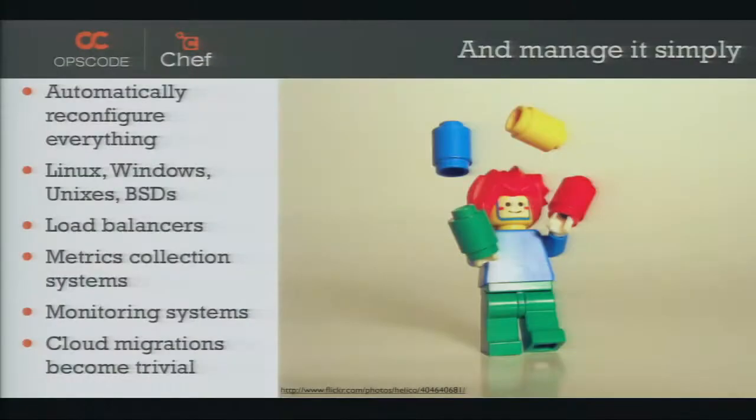When you have an infrastructure that looks like this and you add another box, those updates can become automatic. Just this one extra node is 12 resource changes — that's not something you want to do by hand, because chances are good you're going to mess up. When you do this a hundred times, you might mess up. Chef allows you to build just about anything, whether it's workstations or clusters or infrastructure as a service. It helps you automatically reconfigure everything. We have clients for Linux, Windows, Unix, BSDs. It works great with load balancers, metrics collections, and monitoring, because those things are dynamic. A new machine comes online, it's automatically monitored, and you know exactly what ports to listen on. Moving things in and out of clouds becomes trivial because you've abstracted away the underlying infrastructure.